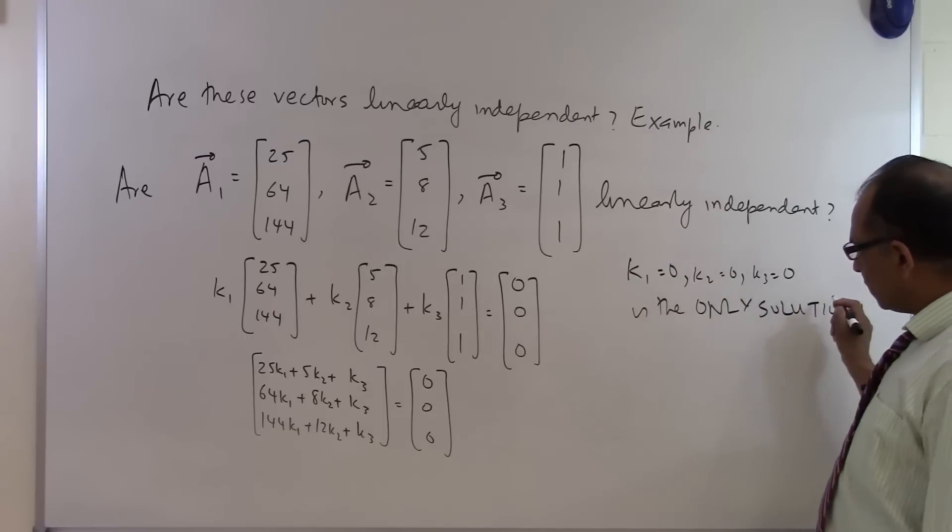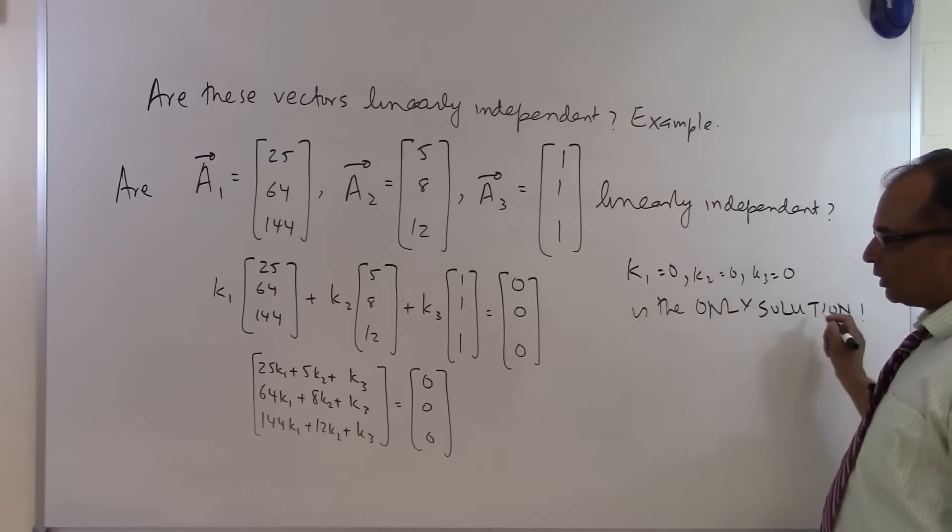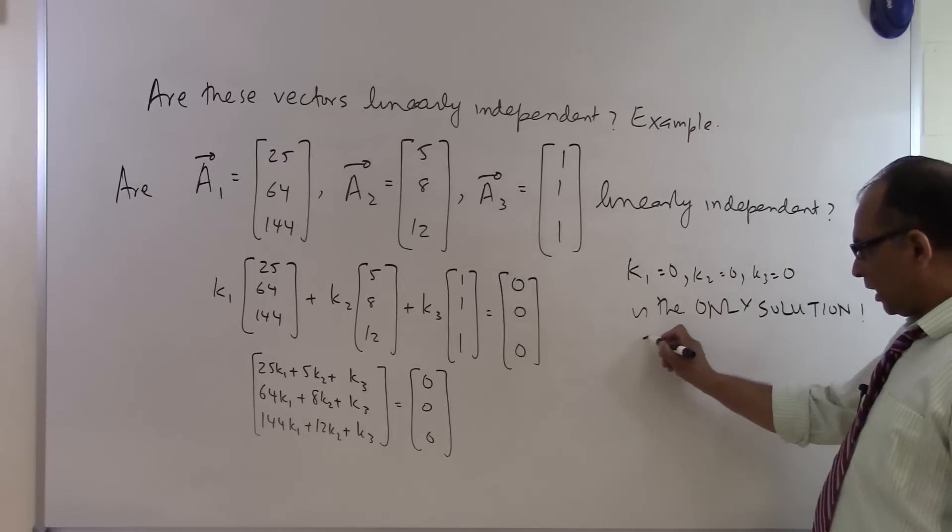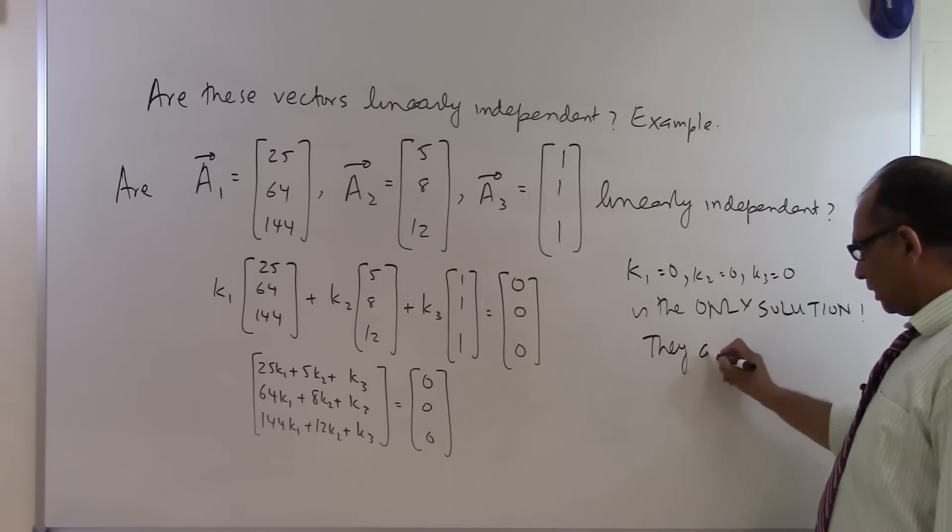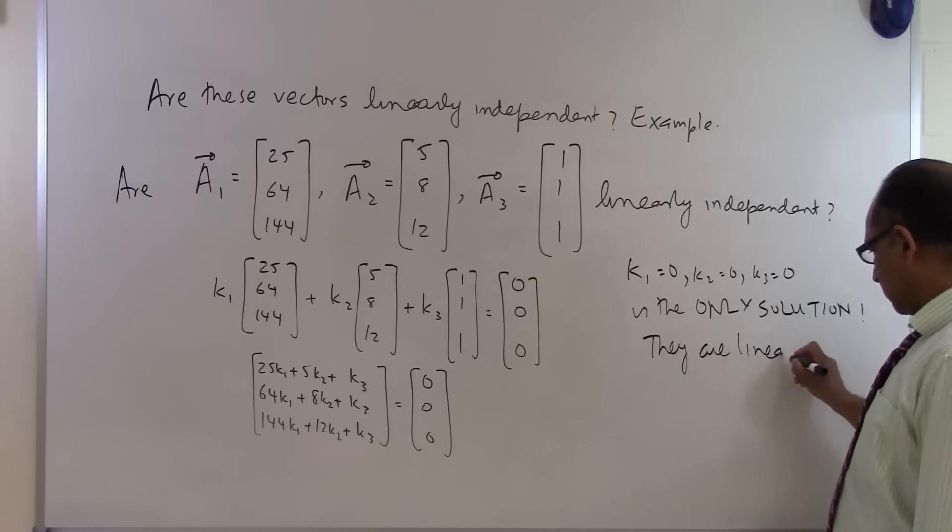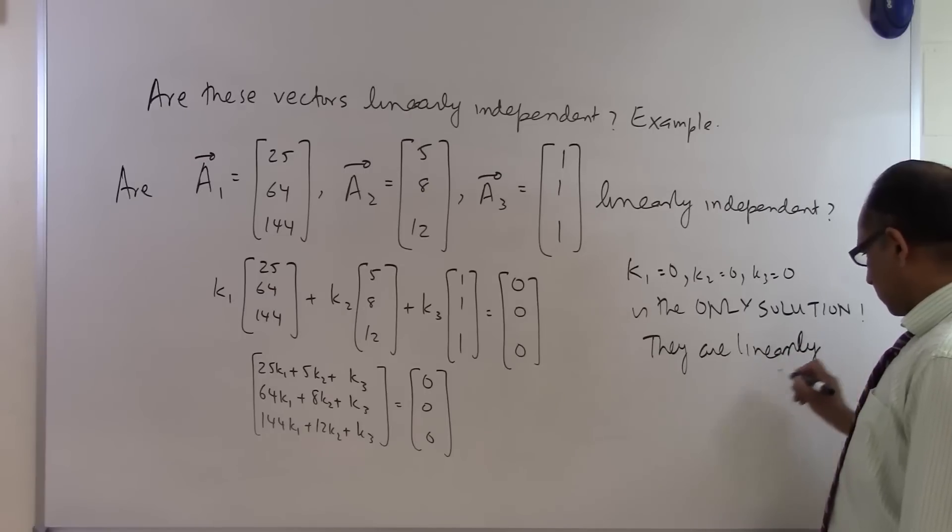So since this is the only solution, the trivial solution is the only solution, and we have three vectors here that means that they are linearly independent.